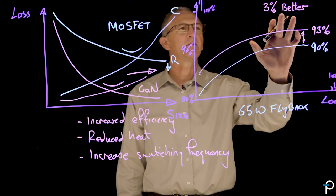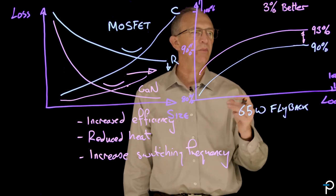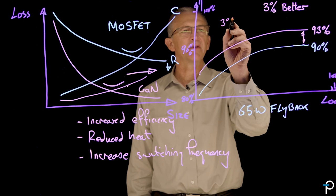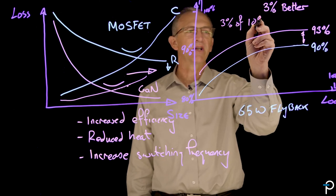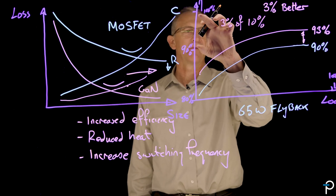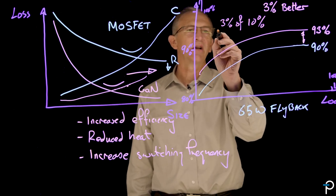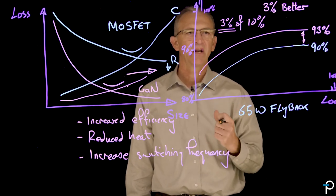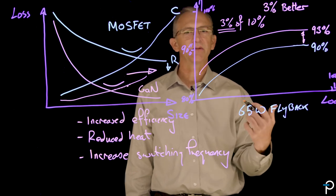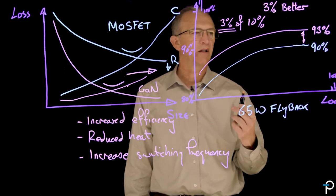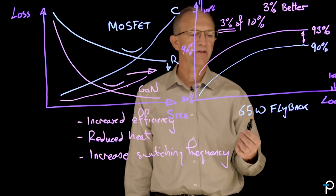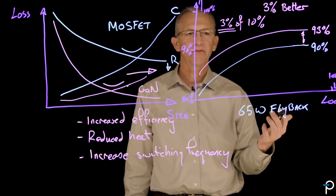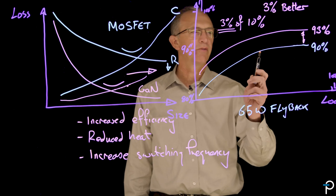Now, 3% doesn't seem like a lot. 3% is a relatively small number. But when you set it against where we are on the curve, what you'll notice is it's 3% of 10%, which are the losses for the power supply. So you're saving 30% of the losses that you would otherwise be generating in your power supply. That's 30% energy saved. That's 30% less energy you have to dissipate in your power supply. Less heat sinking, less size, longer lifetime, doesn't get so hot. So there are a variety of benefits.